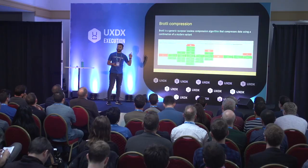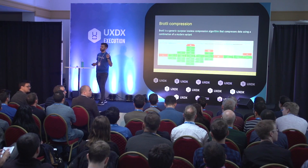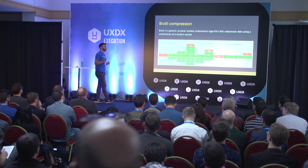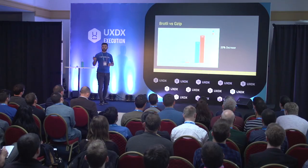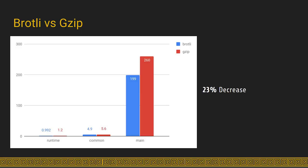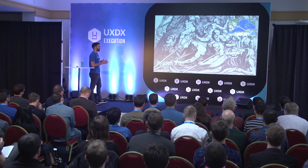How many of you use Brotli in production? What if I show you how easy it is with serverless to start using Brotli? It's just a few lines of code: we intercept the request, check the headers, and if the browser supports Brotli we serve the Brotli-compressed file, otherwise we fall back to GZIP. Why does this matter? Just by doing this with a few lines of code, we are reducing our application footprint by 23%.